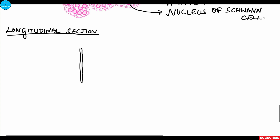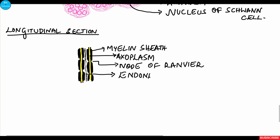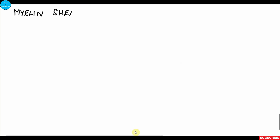When we see the longitudinal section of the peripheral nerve, we see longitudinally running axons with axoplasm surrounded by the myelin sheath. Within the myelin sheath we can appreciate a small gap called the node of Ranvier. Each axon is surrounded by connective tissue, and we can appreciate the myelin sheath, the axoplasm, the nodes of Ranvier, and the endoneurium surrounding each individual axon.